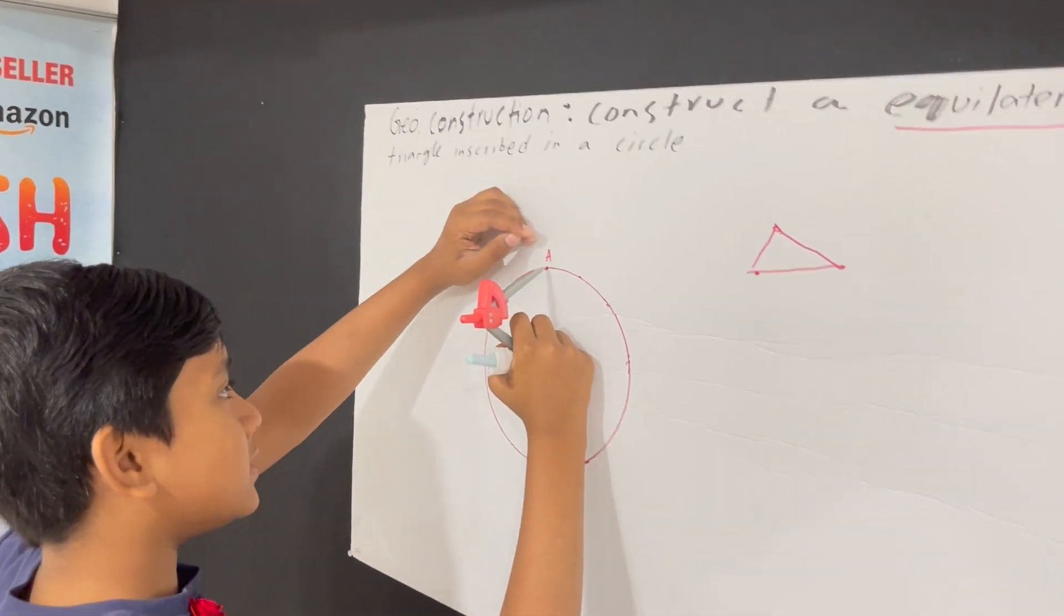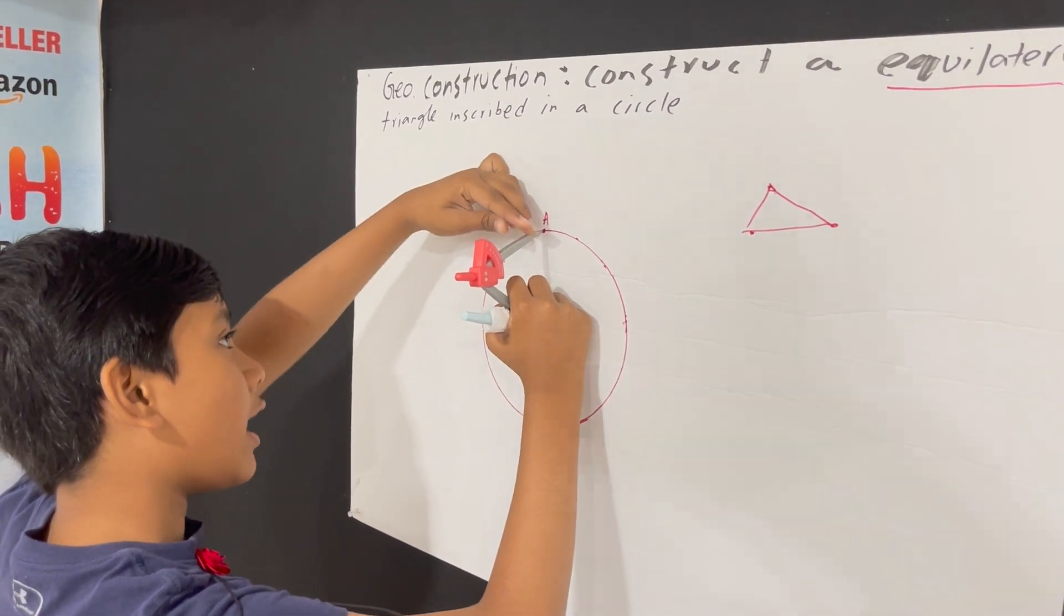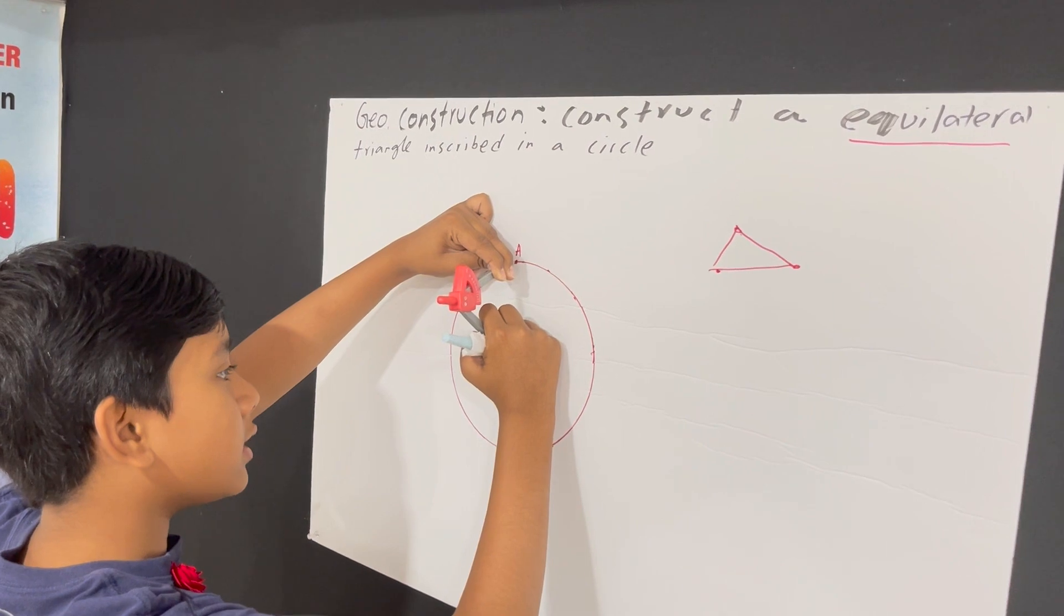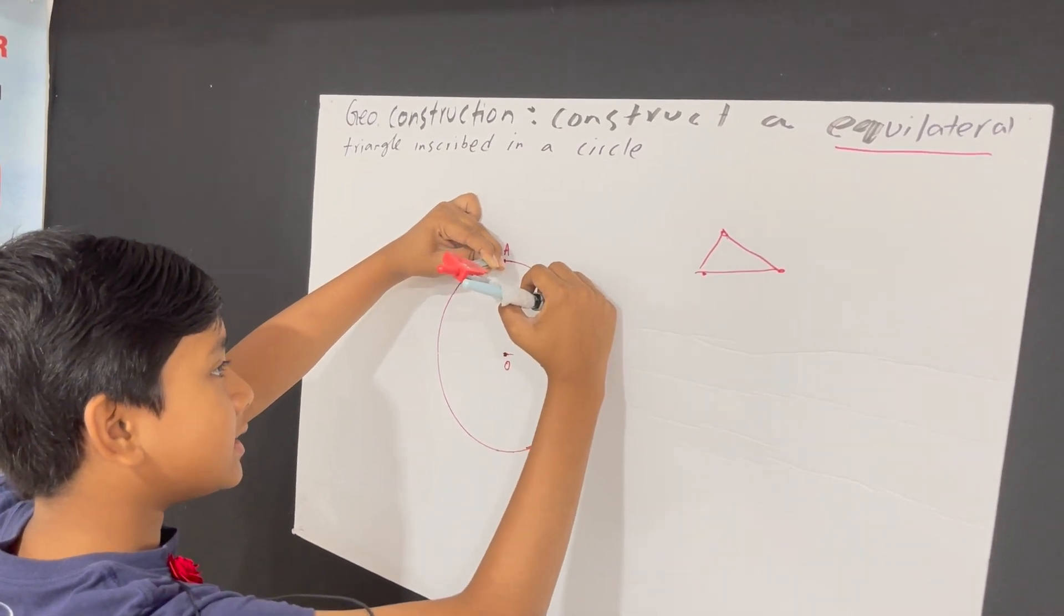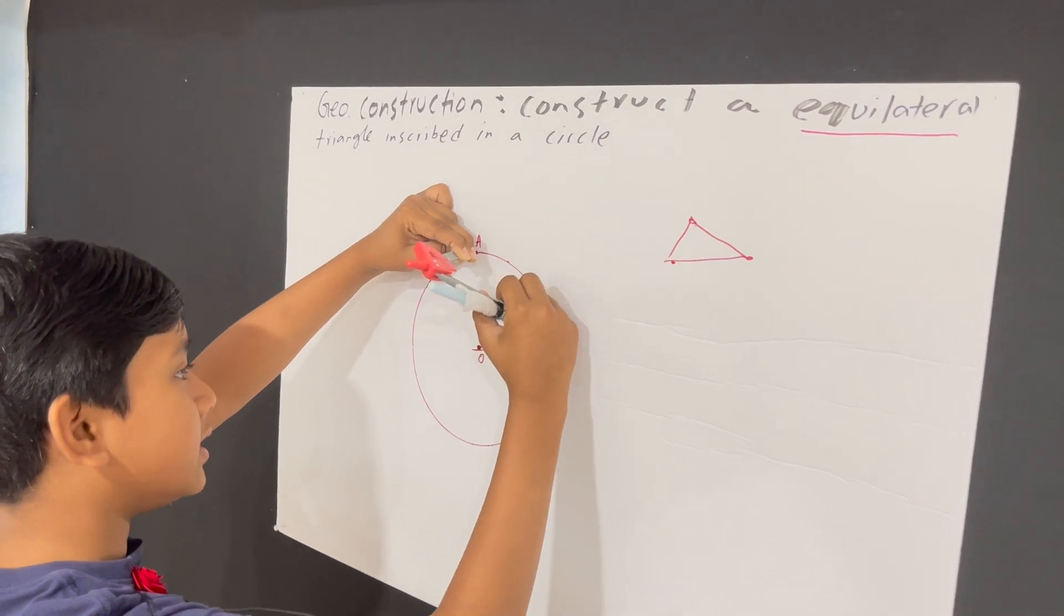So this is a point on the circumference, so it will have the distance away of one radius. Now what we're going to do is I'm going to construct six tiny equilateral triangles over here. So you see this?